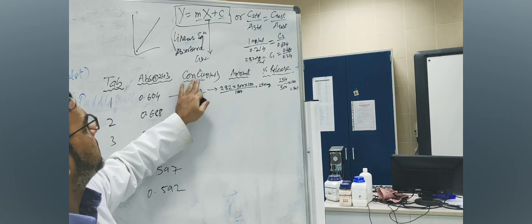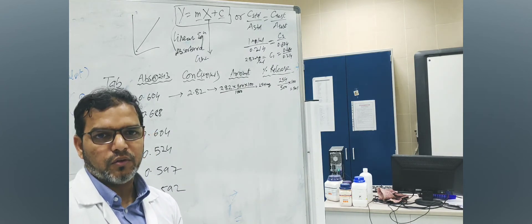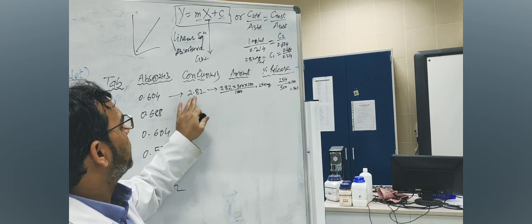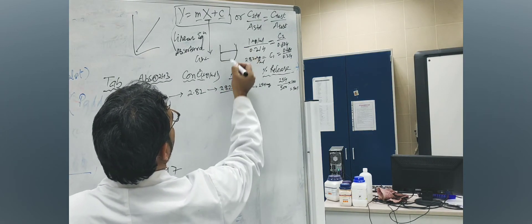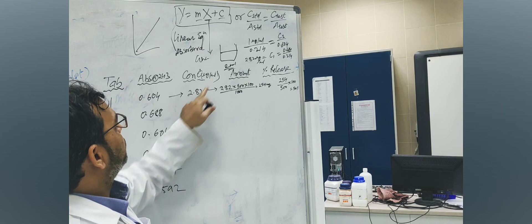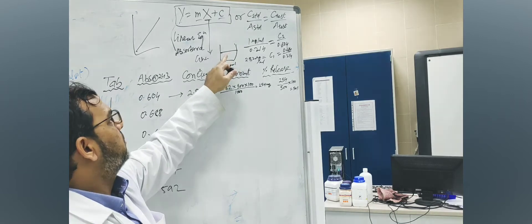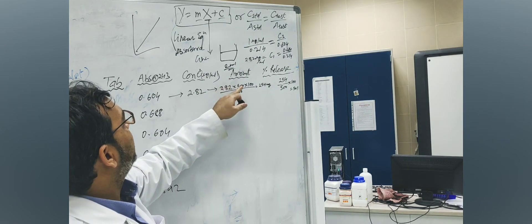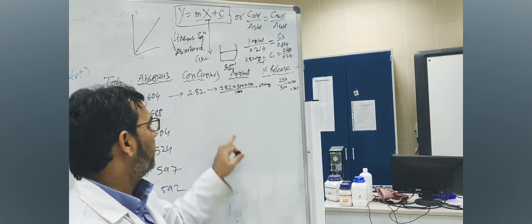Now you need to convert this concentration into the amount released. How much amount from this tablet number 1 was released? So to do this, you need some calculation. This is microgram per mL. And if you have media here and the total media is 2 mL, and this is concentration for 1 mL, so for 2 mL what is the concentration? 2.82 multiplied by 2. Similarly for 900 mL, because the media in the tablet dissolution we take 900 mL, so you are going to multiply by 900 mL.